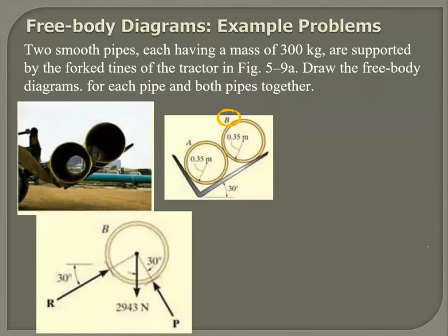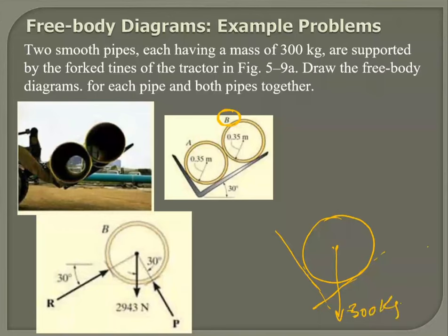Now let's look at the free body diagram of pipe A. I've got a little ground here and a wall here. One active force acting downward — that is the weight, which is 300. I've also got another active force from B. Now for the support reactions: I've got a reactive force from the wall and a reactive force from the floor. So I've got two active and two reactive forces.